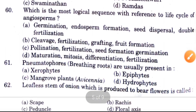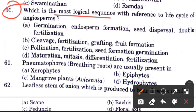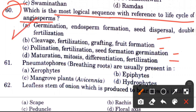Question 60: Which is the most logical sequence with reference to the life cycle? Options are: germination, endosperm formation, seed dispersal, double fertilization / cleavage, fertilization, grafting / pollination, fertilization, seed formation, germination / maturation, mitosis, differentiation, fertilization. The answer is A: germination, then endosperm formation, then seed dispersal, then double fertilization.